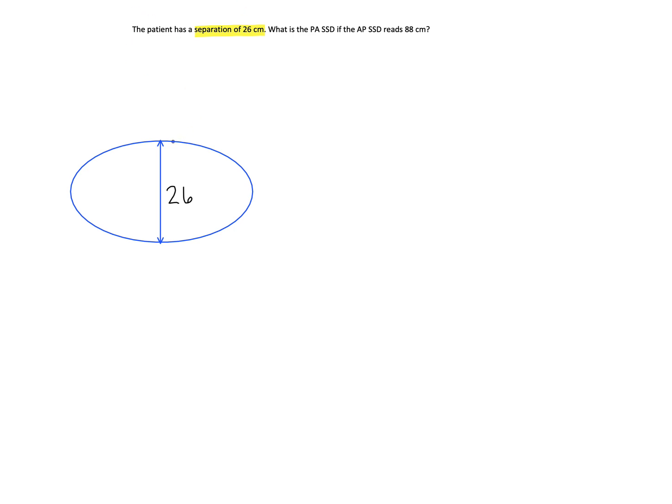If the AP SSD, so that's here, AP, is 88, that means that the isocenter is somewhere within the patient.